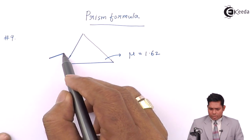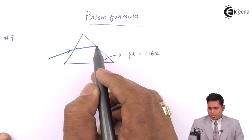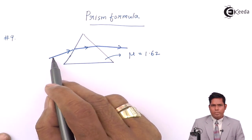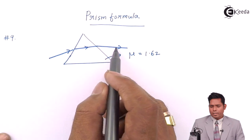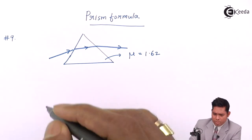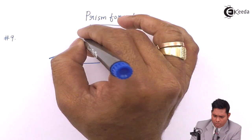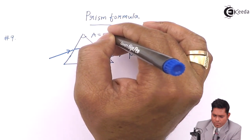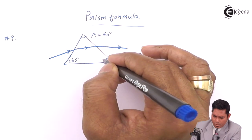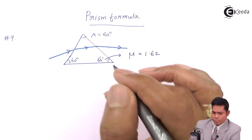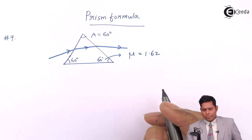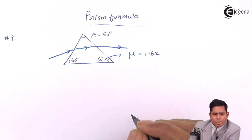When a ray of light passes through it, it will go something like this — this is the incident ray, the refracted ray, and the emergent ray. Because it is an equilateral prism, all the angles are 60 degrees, so the angle of the prism must be 60 degrees.